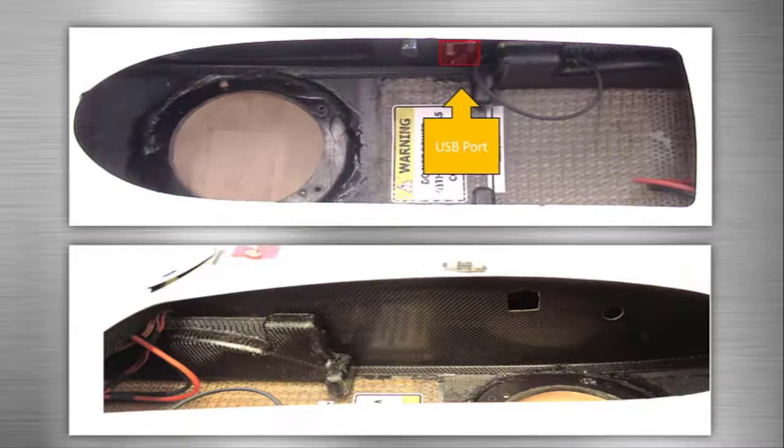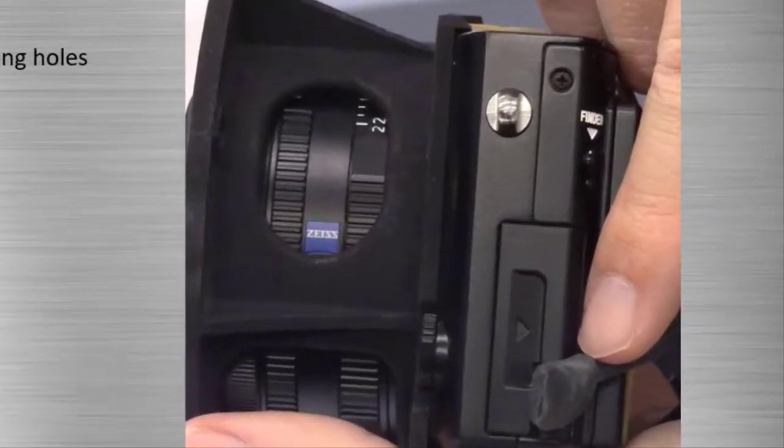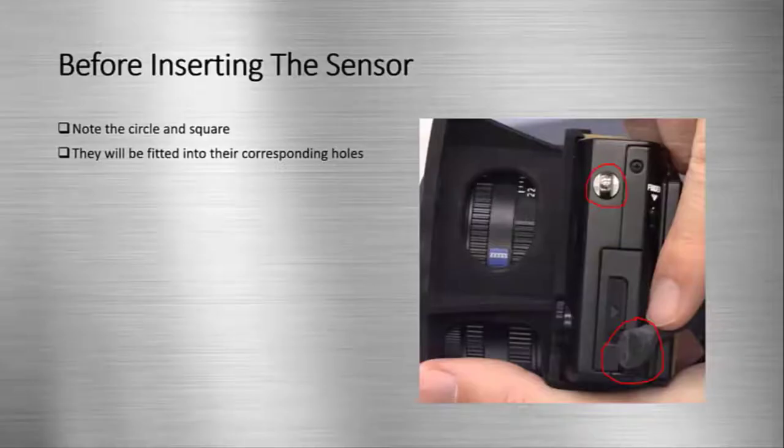Before inserting the sensor into the sensor bay, make sure to note the metallic circle shown here, as well as the square piece shown here, that are both located on the left side of the sensor. These pieces will need to be fitted into the circular and square holes on the left side of the camera bay.